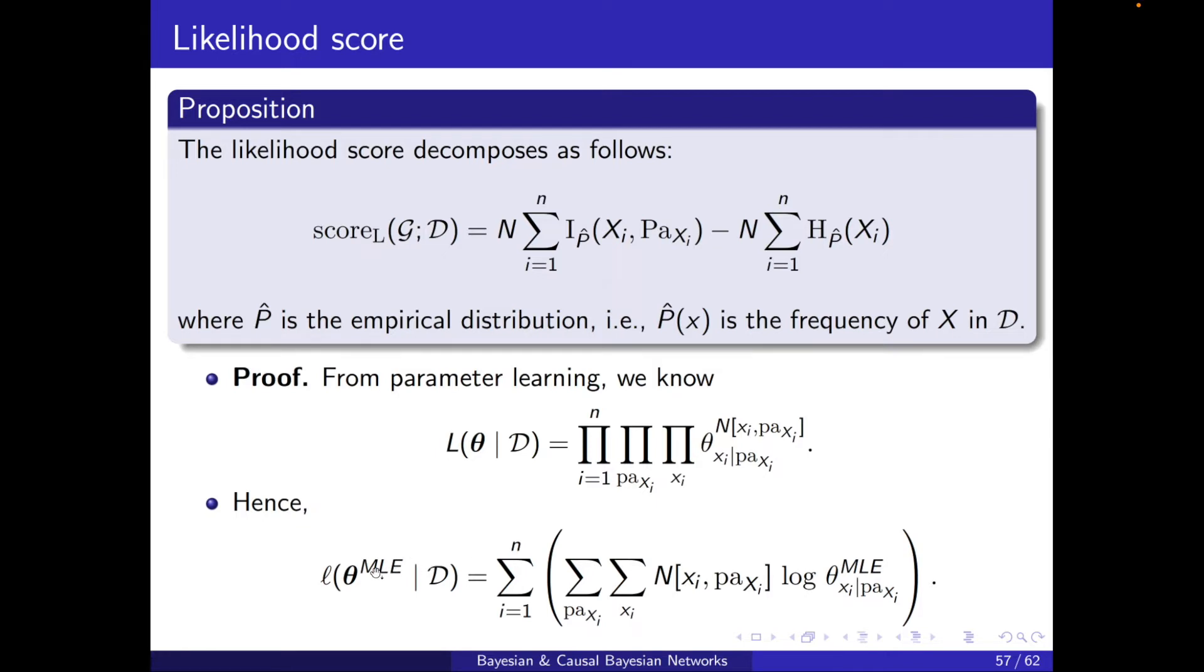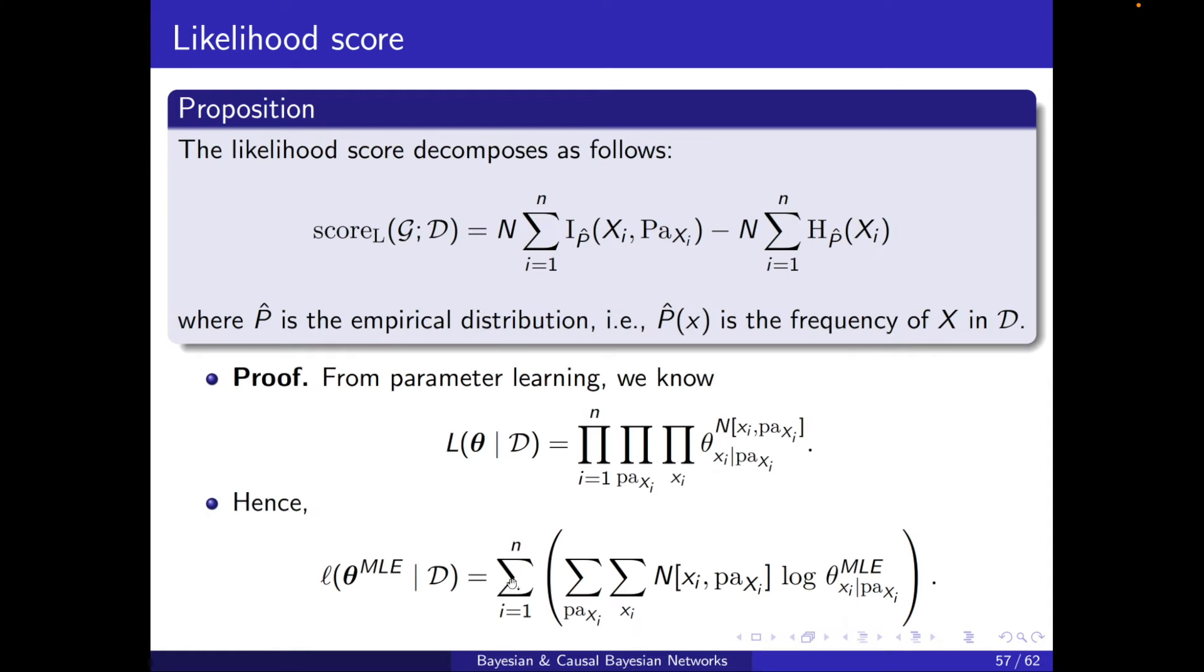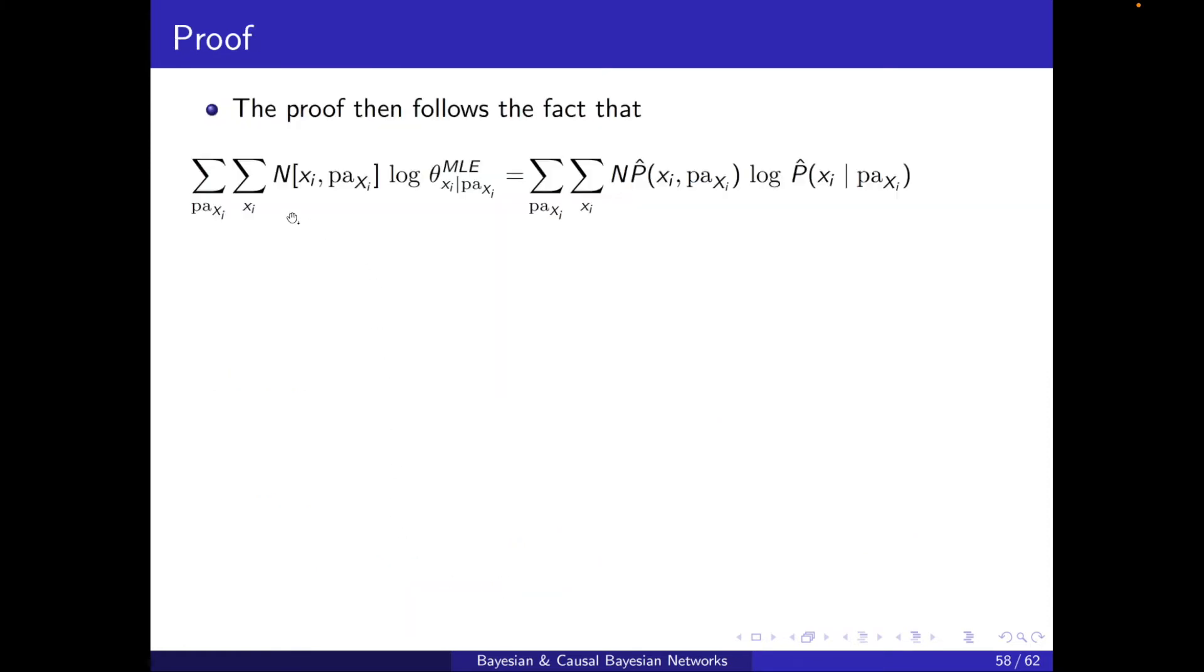So n will appear as a coefficient, and I will have the log of the parameter theta. Just note that here I'm using MLE, so MLE will also appear here. And for the rest of the proof, I'm focusing only on this second part, not the summation over n. This will be written in this way. So n, the number of times that Xi and parents of Xi appear,